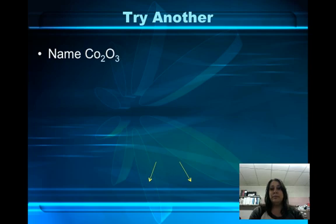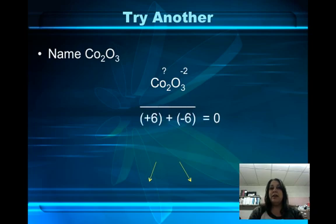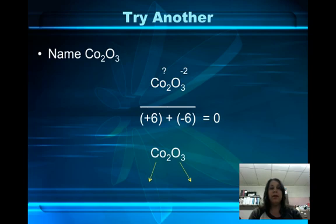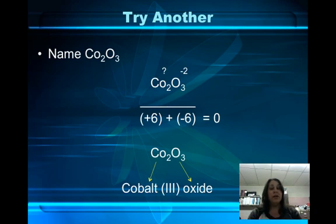Let's try another one. If we have Co2O3, the net charge on the oxygen is negative 6, therefore the net charge on the cobalt has got to be positive 6. Have you figured out the charge on the cobalt yet? We name this cobalt(III) oxide because the charge on the cobalt is 3.